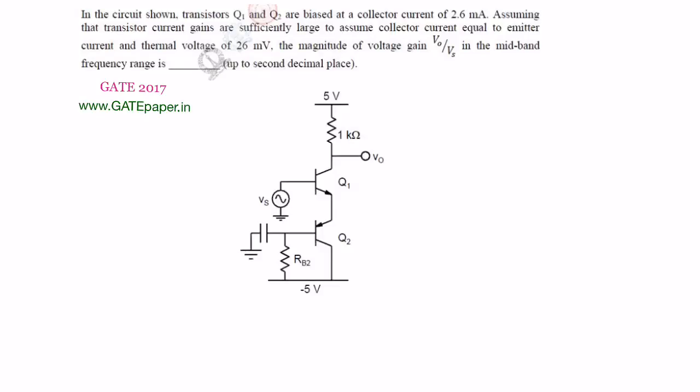In this question, it has given that the transistors Q1 and Q2 are biased at a collector current of 2.6 mA. That means DC collector current is 2.6 mA. Biasing is always related to the DC — it is not related to AC.